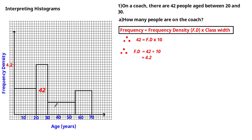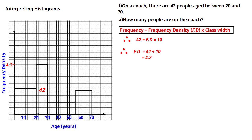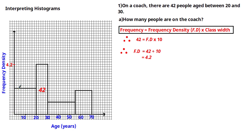Now we need to find the frequencies of the other class intervals to calculate the total number of people on the coach. The class widths are fairly easy to calculate — one is 20, the 20-to-30 interval is 10, and this one is 20 plus 5 which is 25. Notice that the frequency density axis hasn't been scaled, so we need an appropriate scale to correctly read the frequency densities.